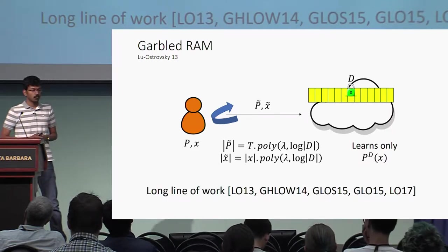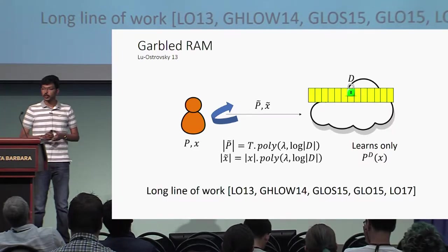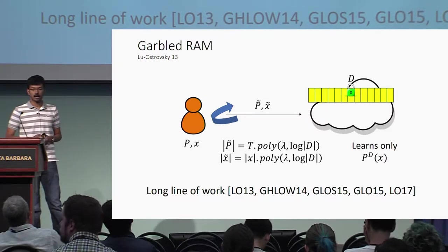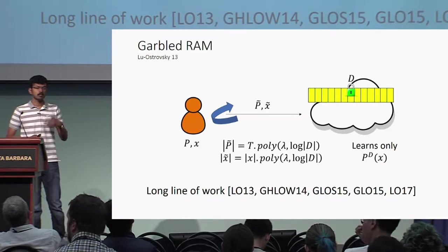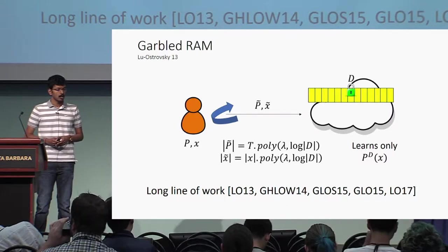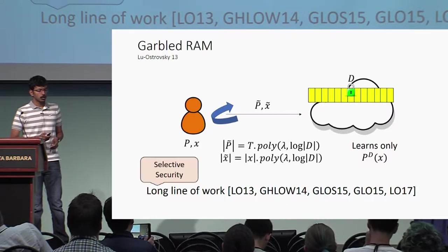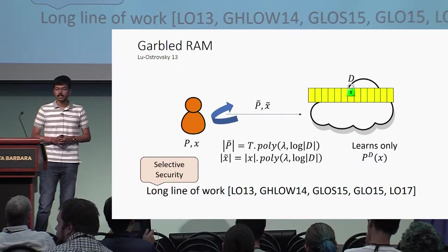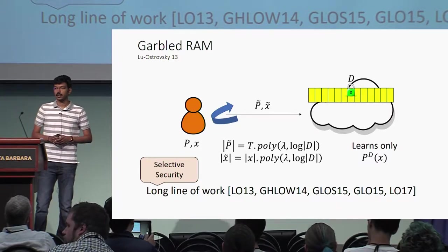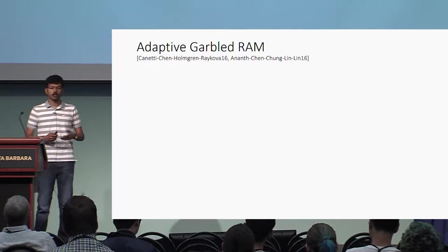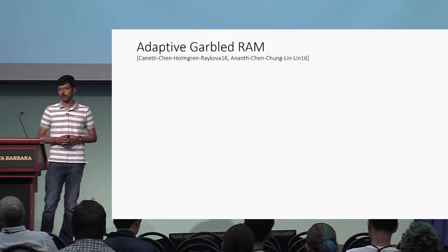A long line of work starting with the original work of Lu and Ostrowski has now given us very efficient constructions of garbled RAM from the basic assumption that one-way functions exist. The security notion considered in all these works is called selective security, and in this talk we'll be interested in the stronger notion of adaptive security.